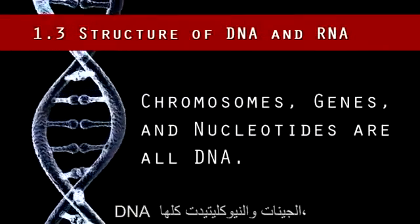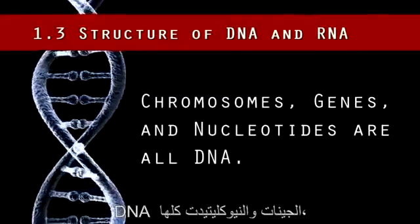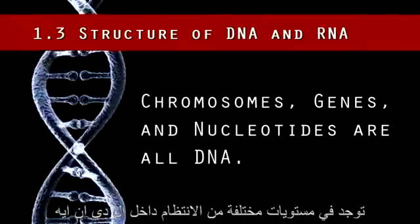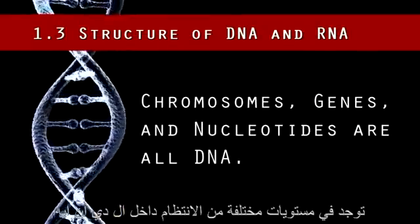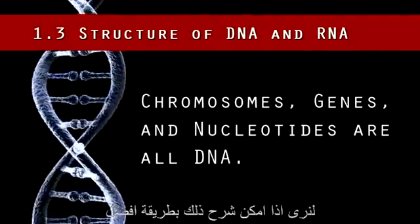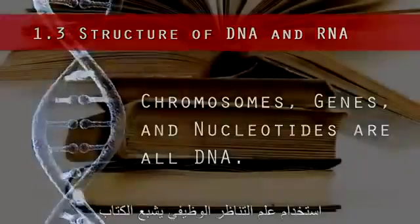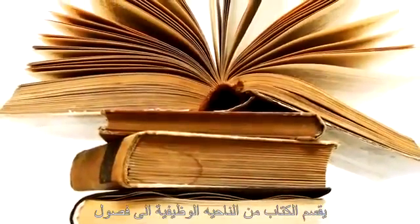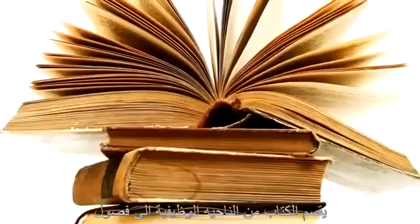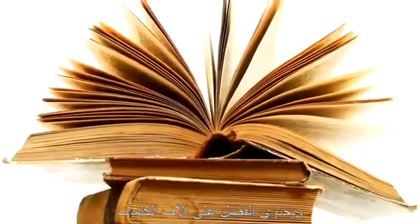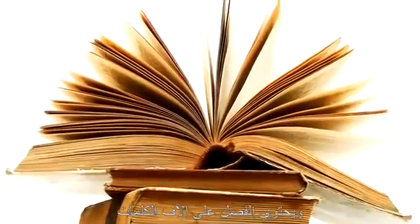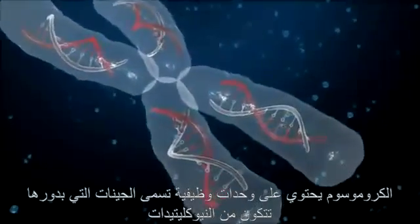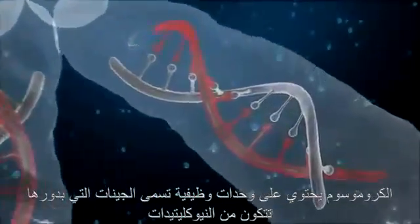Chromosomes, genes, and nucleotides are all DNA — they are just different levels of organization for the DNA. To use an analogy, it's like a book. The book is divided into functional units called chapters, and the chapters are made up of individual words. Similarly, chromosomes are divided into functional units called genes, which are made up of individual nucleotides.